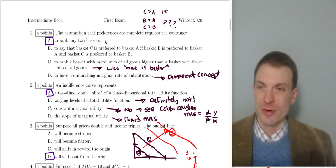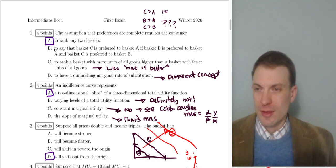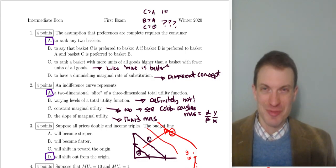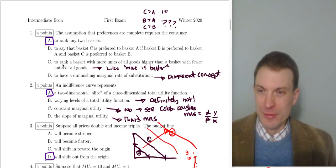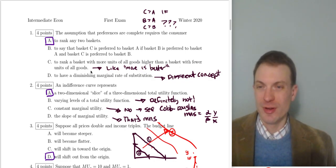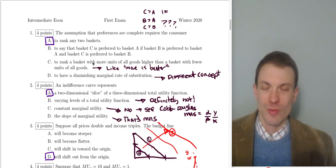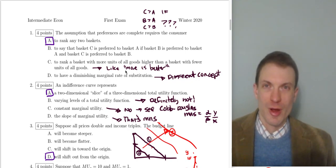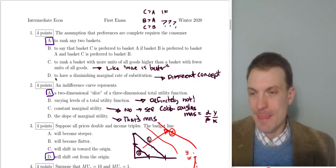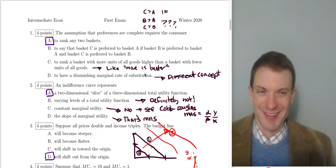Completeness is the property of being able to rank any two baskets — saying that you like one better than the other or you're indifferent between them. Option B says C is preferred to A if B is preferred to A and C is preferred to B — that's transitivity, not completeness. Option C, ranking a basket with more units of all goods higher, is like 'more is better.' Completeness doesn't require we rank bundles in a particular way, just that we can make a comparison. Diminishing MRS is a completely different concept.